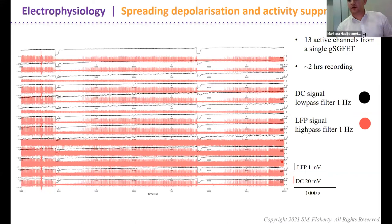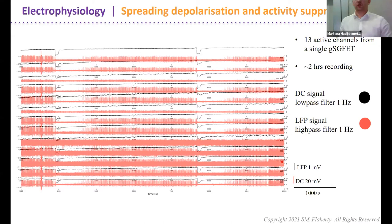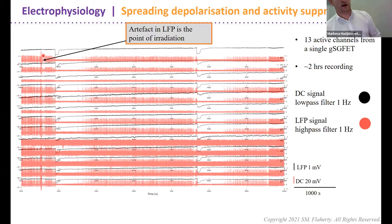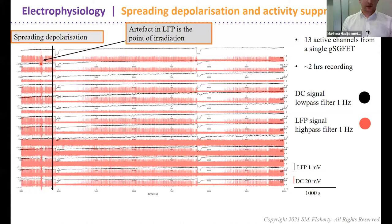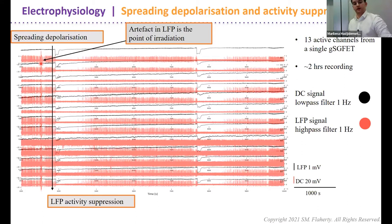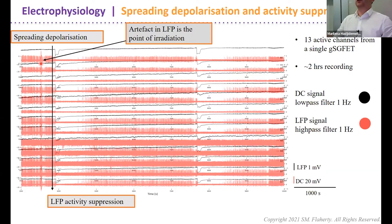Here is some raw data from 13 channels from a single transistor array, recorded over two hours. The baseline is very stable with no drifting. The black trace is the DC-coupled signal where you'd see spreading depolarizations; the red/pink trace is the local field potential. Post-irradiation you see spreading depolarizations propagating through the channels with LFP activity suppression — the two biomarkers confirming spreading depolarization and stroke. The second spontaneous spreading depolarization is caused by tissue damage and depicts tissue health.